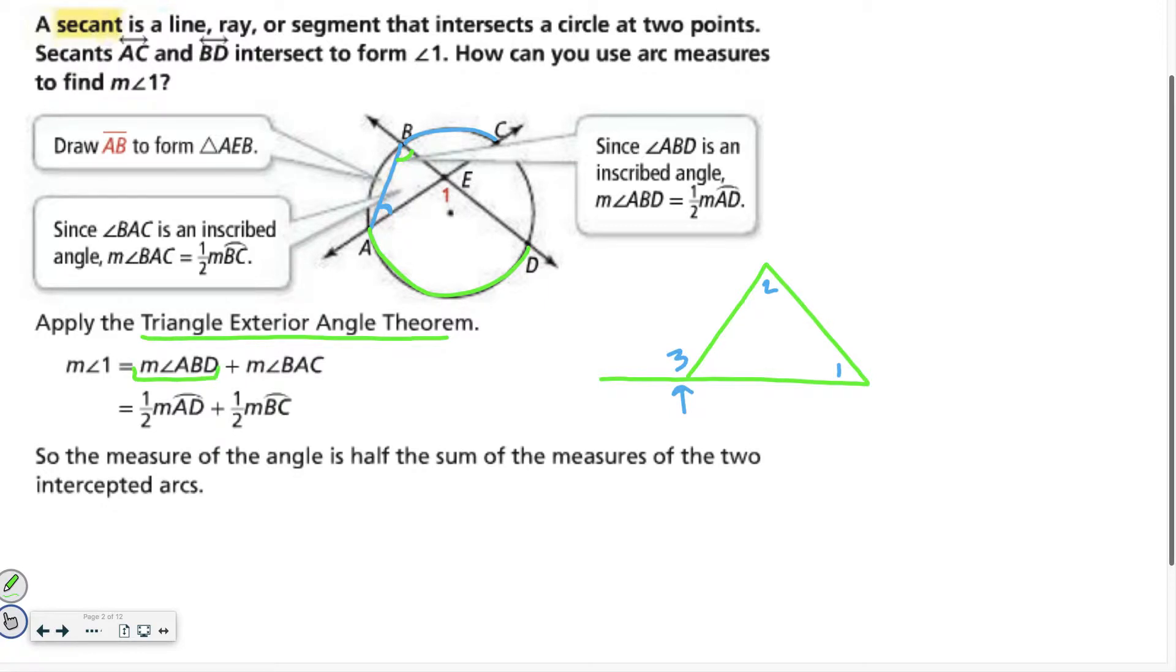Measure of angle 1 equals the measure of angle ABD, so that's the green angle I've highlighted, and the measure of angle BAC, the blue angle I have highlighted. Or if I want to rewrite that, I know that the measure of angle ABD is one half of the measure of the arc AD, and BAC is one half of the measure of the arc BC. So another way I could write that is, since they have a one half in common, I could just say we're going to add the two arcs together and multiply by one half.